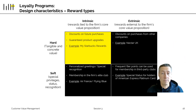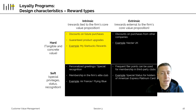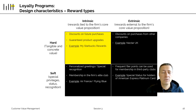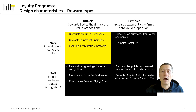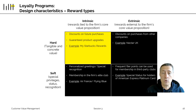The rewards that loyalty programs give generally fall into four categories based on two dimensions. The first dimension is whether the reward is intrinsic to the value proposition or extrinsic. The second dimension is whether it's a tangible, concrete reward — called a hard reward — or something more subtle, called a soft reward. A hard intrinsic reward is essentially a discount based on how much you buy: discounts on future purchases, guaranteed upgrades, or points redeemable for free flights. The most extreme version is the Starbucks model: after 10 coffees, you get the 11th for free.